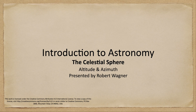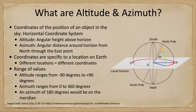Greetings and welcome to the introduction to astronomy. In this week's discussion on the celestial sphere, we are going to talk about altitude and azimuth coordinates that are used to measure the position of an object in the sky. This is part of what we call the horizontal coordinate system, and they are a way to determine the position of an object in the sky. Altitude and azimuth — two coordinates — will give us an exact position on the sky.